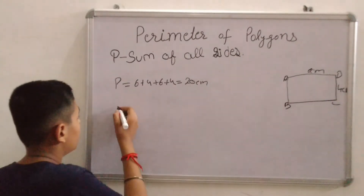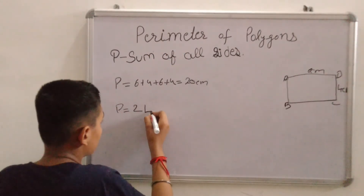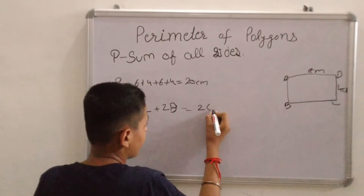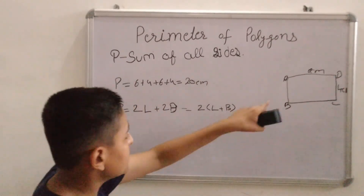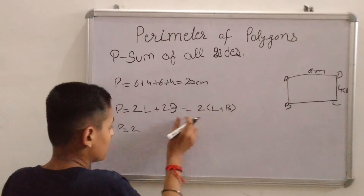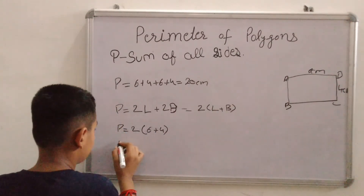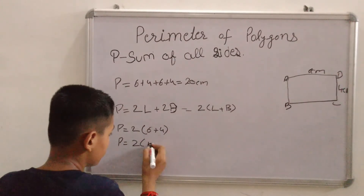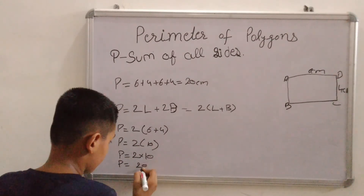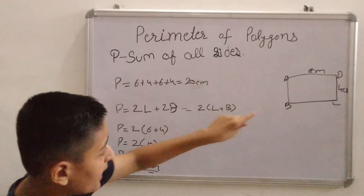There is another method to calculate the perimeter of a rectangle: 2L plus 2B, which equals 2 times the bracket of L plus B. The length is 6 cm and the breadth is 4 cm. So perimeter equals 2 multiplied by the bracket of 6 plus 4, which is 2 multiplied by 10, equals 20 cm. The answer is again the same, and this method is applied on a rectangle.